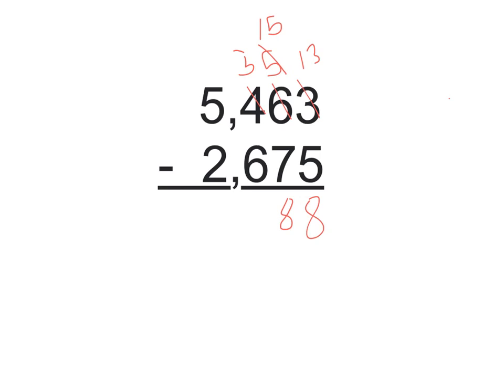and I want to take away 6,100s from 3,100s, which I cannot do, so I need to ungroup from the 1,000s. That's going to leave me 4,1000s, and it's going to leave me 1,300s.